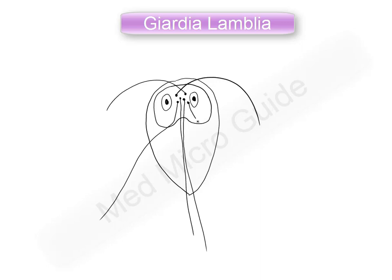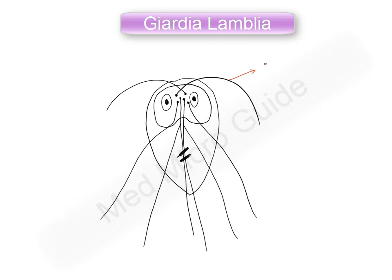These are the two axostyles with posterior flagella. This is the lateral uncrossed flagella, and that is the median body. Now we will label this diagram. These are the lateral crossed flagella.